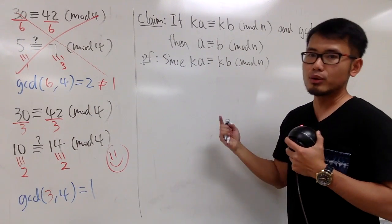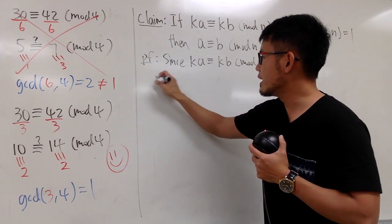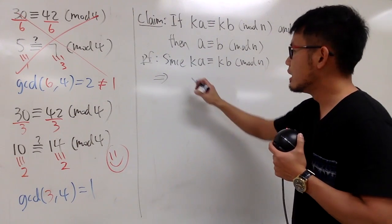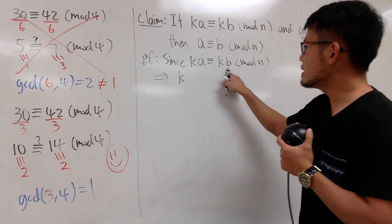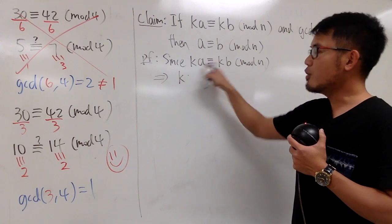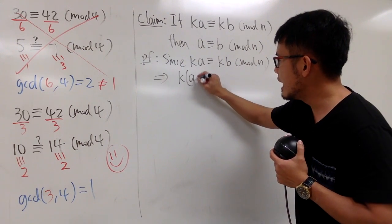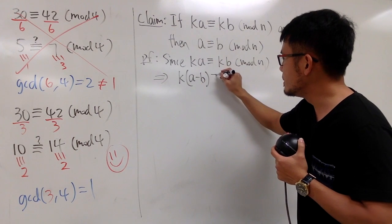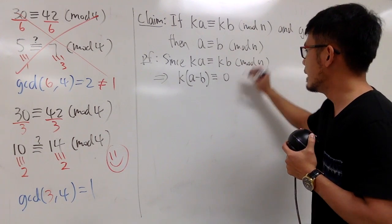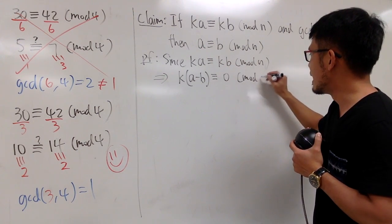Let's subtract kb on both sides. So, from here, we can say this implies k, and once I subtract this on both sides, both of them will have the k. So, I can factor out the k. So, k times (a minus b) is going to be congruent to 0, and then we still have to write down the mod n.